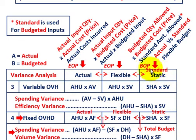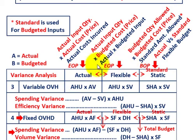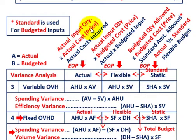At the beginning of the period, you set up some standard or static amount. At the end of the period, you determine your actual cost — that would be the actual input quantity times the actual cost or price on a per unit basis. Those are the actual costs incurred.